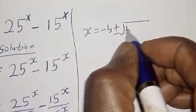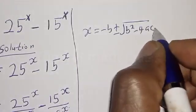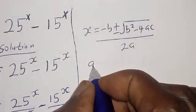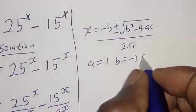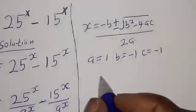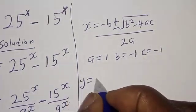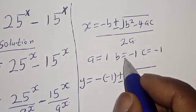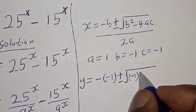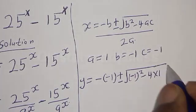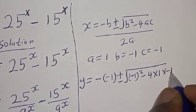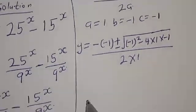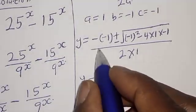The quadratic general formula is given as y is equal to minus b plus or minus square root of b squared minus 4ac, divided by 2a. From the quadratic equation we have a is equal to 1, b is equal to minus 1, and c is equal to minus 1. Then we have y is equal to minus of minus 1, plus or minus square root of b squared — that is minus 1 squared — minus 4 multiplied by 1 multiplied by minus 1, divided by 2 multiplied by 1.